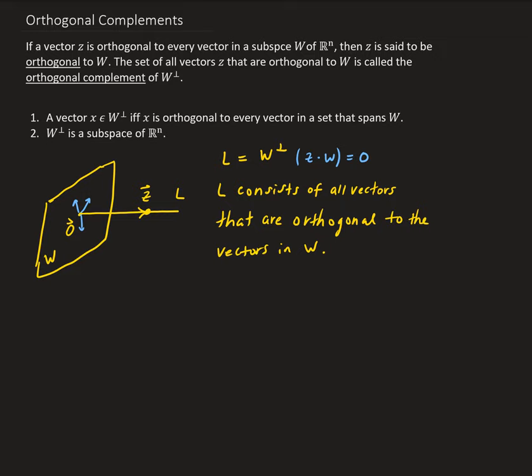If you recall, if two vectors when you dot them is equal to zero, that means they're orthogonal to each other. What we're going to do is show that W perp — so W perp is basically L in this diagram — is a subspace of Rⁿ.